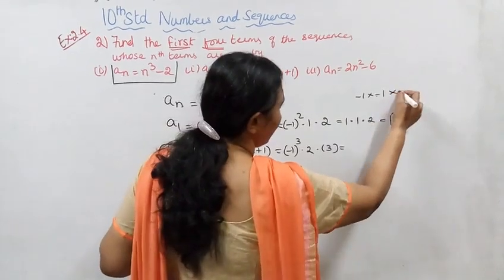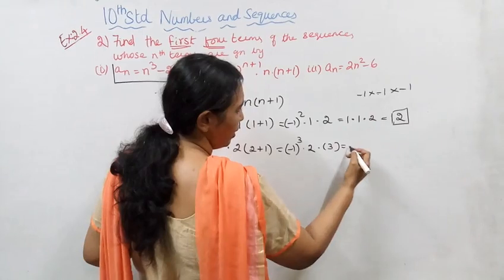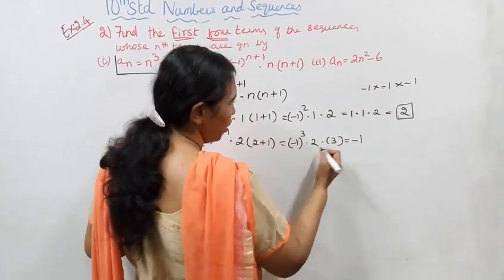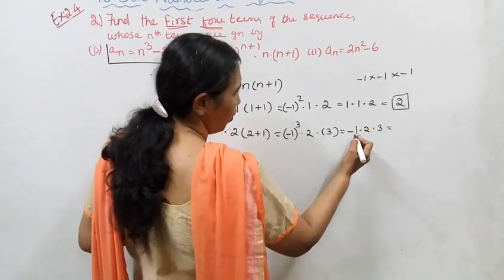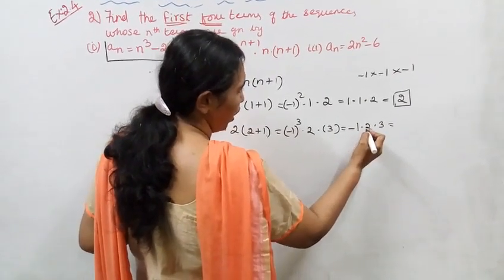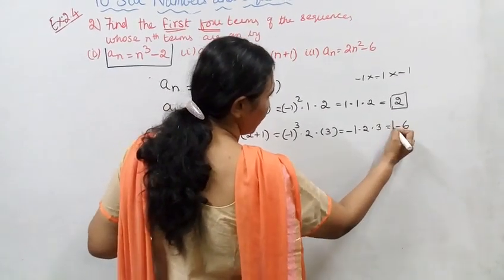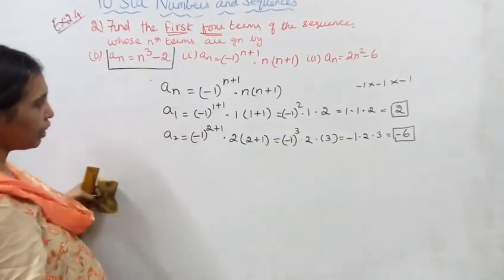Minus 1 into minus 1 is plus, plus into minus is minus. 1 into 1 into 2 into 3 equals 6. This is minus 6, the answer.